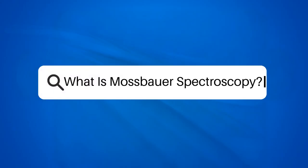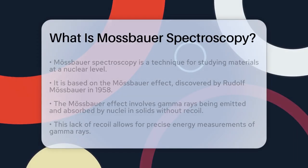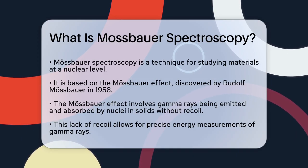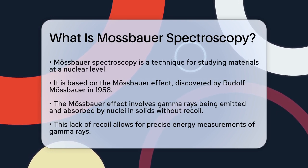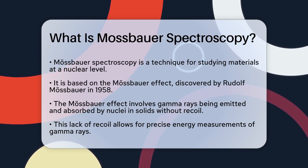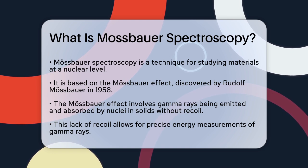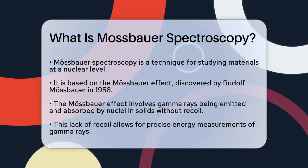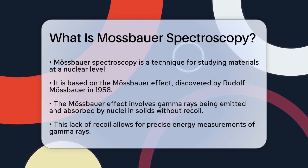What is Mössbauer spectroscopy? If you're curious about how scientists can peek into the inner workings of materials at a nuclear level, you're about to discover a fascinating technique called Mössbauer spectroscopy. Let's break it down. Mössbauer spectroscopy is a way to study the properties of materials by looking at how they interact with gamma rays. This method is based on the Mössbauer effect, discovered by Rudolf Mössbauer in 1958.